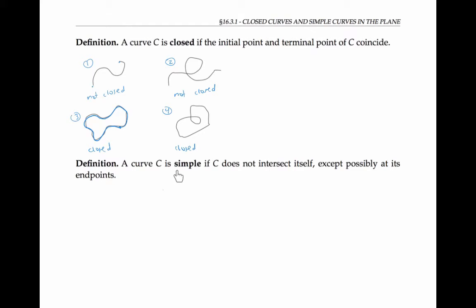The curve C is called simple if the curve does not intersect with itself except possibly at the endpoints.